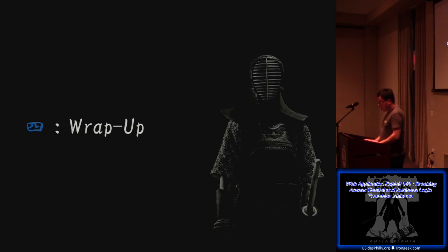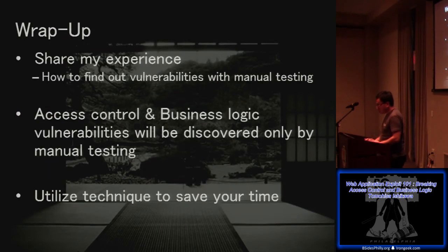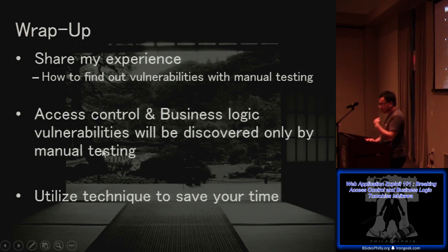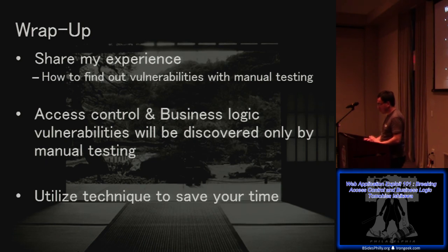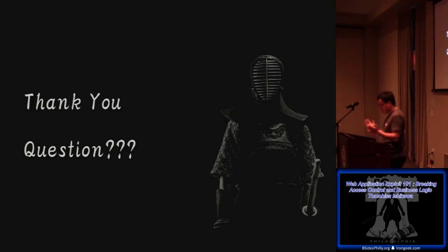To wrap up: I shared my experience, especially focused on how to find these vulnerabilities with manual testing. Access control and business logic vulnerabilities are discovered only by manual testing. Scanners are powerful and helpful, but to find these vulnerabilities you must also do manual testing. The techniques I introduced — targeting, diffing, and fuzzing — help save time during penetration testing. Thank you for coming.